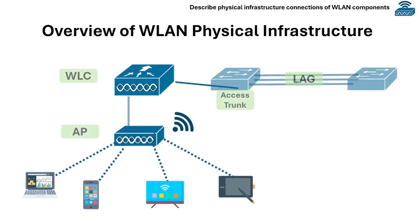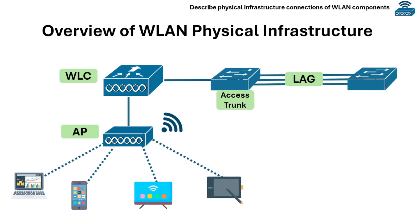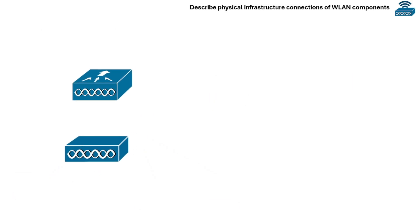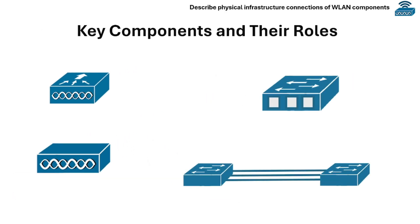To understand how wireless LAN works in a Cisco setup, we need to know how the APs, WLC, and switches physically connect, and how port configurations and link aggregation fit in. Let's first talk about the key components of a wireless LAN and their roles.